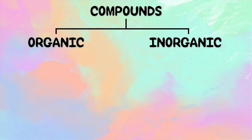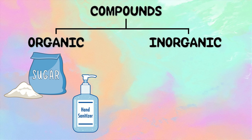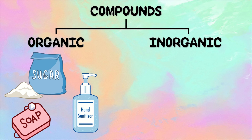Let us take a look at the examples of organic compounds. We have glucose or sugar that we use in our food, alcohol that we use especially nowadays in the midst of pandemic — let's make it a habit to sanitize our hands — and soap to wash our hands to prevent viruses from entering our body. All of these contain carbon.